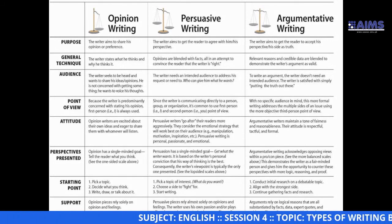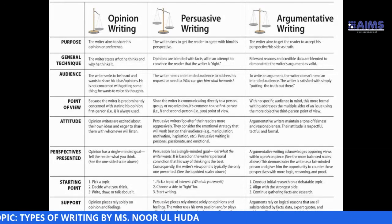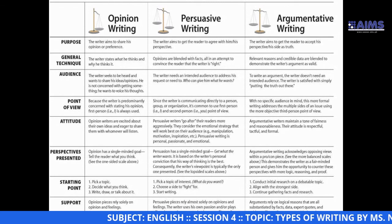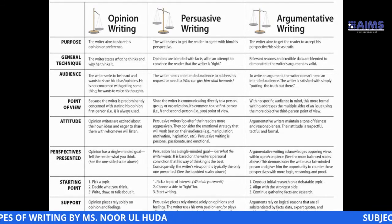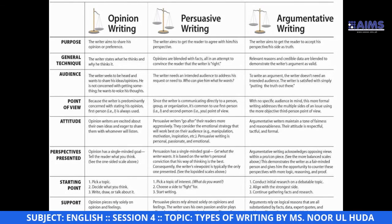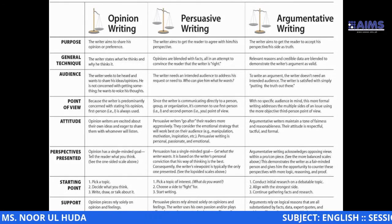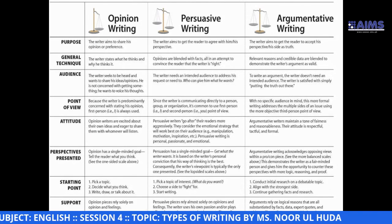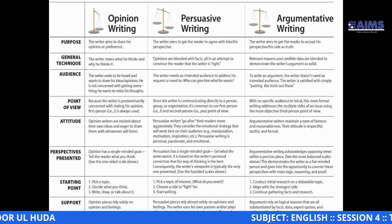In terms of starting point: for opinion writing, pick a topic, decide what you think, and write about it. For persuasive writing, pick a topic, choose a side to fight for, and start writing. For argumentative writing, you research first, align with the strongest side based on facts and research, and then continue. Opinion pieces rely solely on opinions and feelings. Persuasive writing also relies on opinions and feelings, driven by the writer's own passion and emotions.